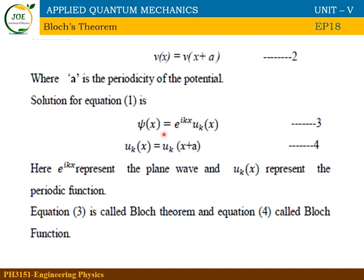The solution to this wave equation is the Bloch function: ψ(x) = e^(ikx) · u_k(x), where u_k(x) is a periodic function.